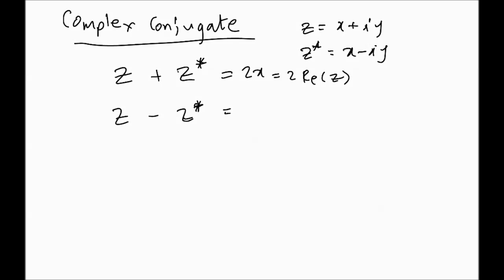Z minus z star, z minus z star, clearly, is going to get rid of the real part. So, the real part will go away, and you'll be left with 2i, y, which means it is equal to twice the imaginary part of z, times i, of course, 2i, imaginary part of z. And, z times z star is just x squared plus y squared.